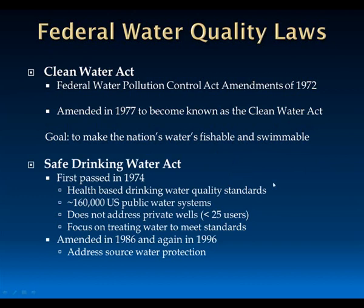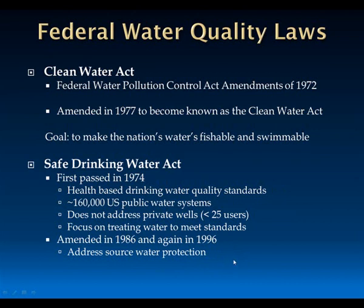The Safe Drinking Water Act had two big components. The first was to set water quality standards for public drinking water supplies, requiring public water providers to treat water to meet those standards. Then, later in 1986 and 1996, a source water protection component was added as a second line of defense—addressing quality not just at the treatment plant, but also protecting the source areas where that water comes from.